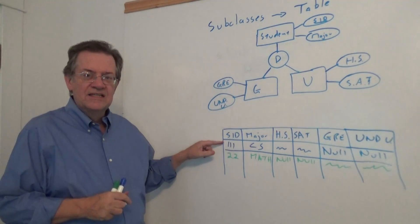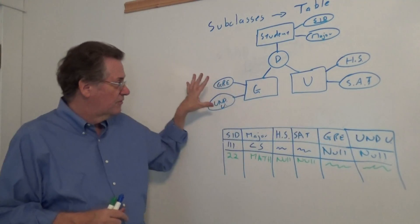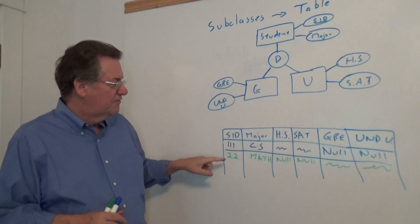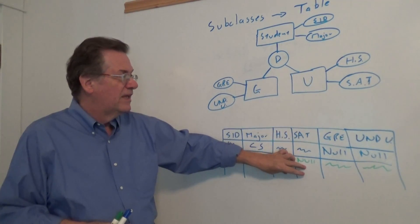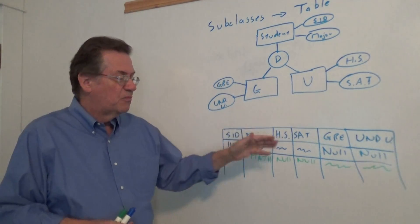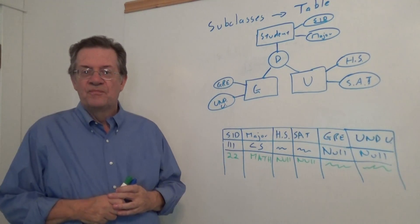So the pattern that I want you to be aware of is that if the student is an undergraduate, we have null values for the graduate up here. If the student is a graduate, then we have null values in terms of high school SAT. So we'd end up with a lot of null values, but all the data would be in one table.